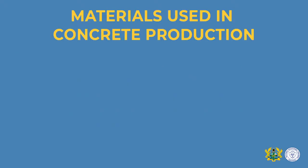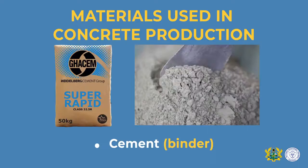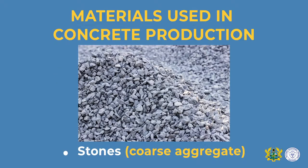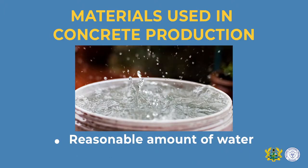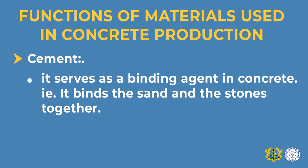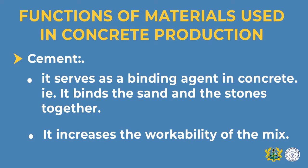The materials used in concrete production are cement (the binder), sand (the fine aggregate), stones (the coarse aggregate), and a reasonable amount of water. The cement serves as a binding agent in concrete — it binds the sand and the stones together. It also increases the workability of the mix.